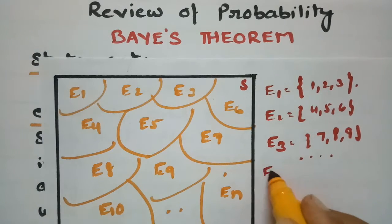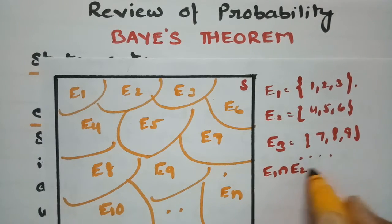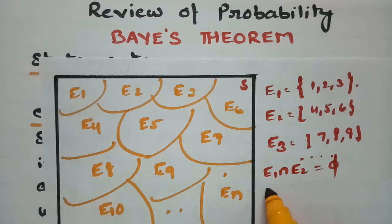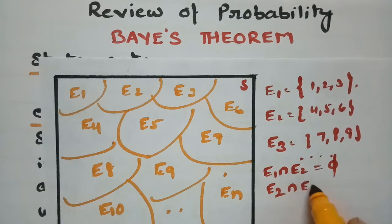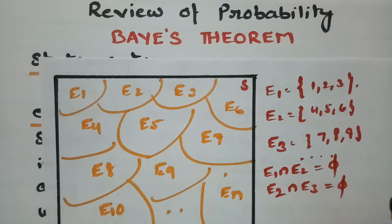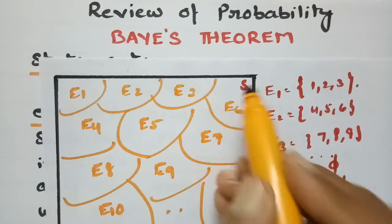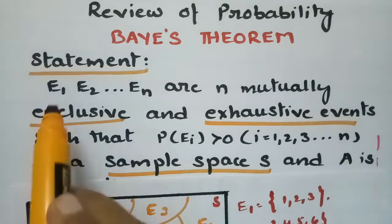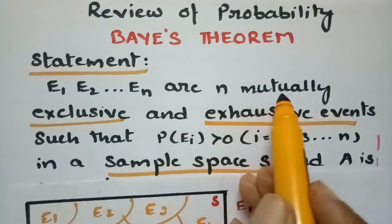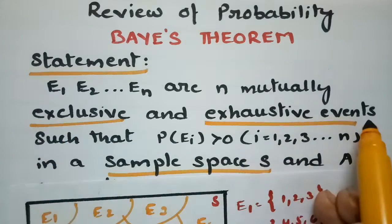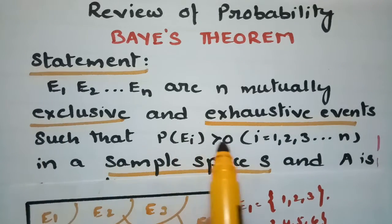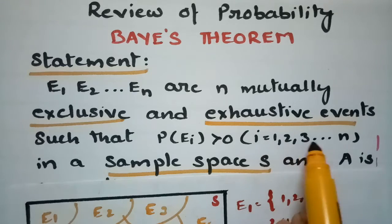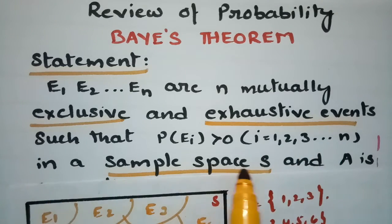Therefore we say that E1 intersection E2 is an empty set. You take any two among these — E2 intersection E3 is again empty. These are disjoint sets in the total sample space S. E1, E2, E3 and so on EN are N mutually exclusive and exhaustive events such that each probability is positive, where I equals 1, 2, 3 and so on N in a sample space S.